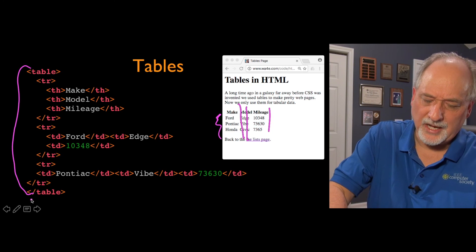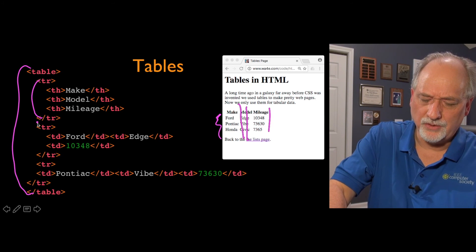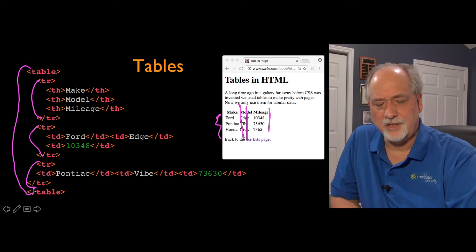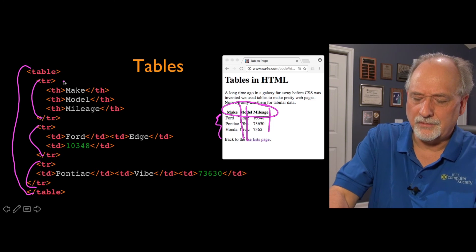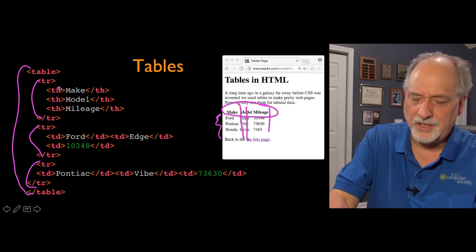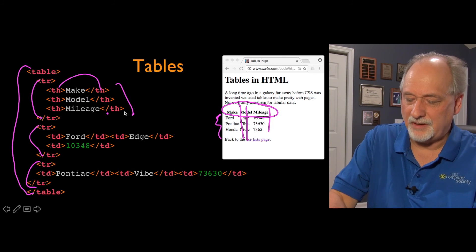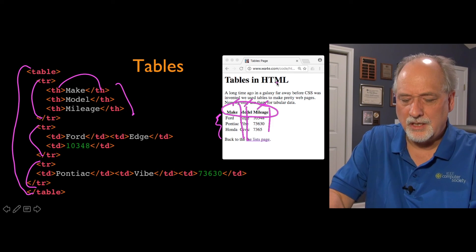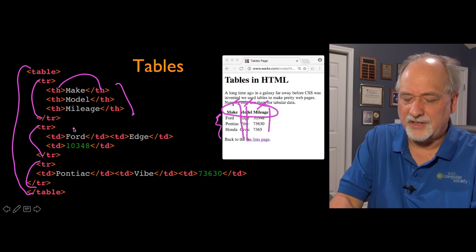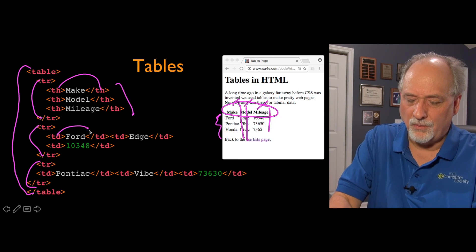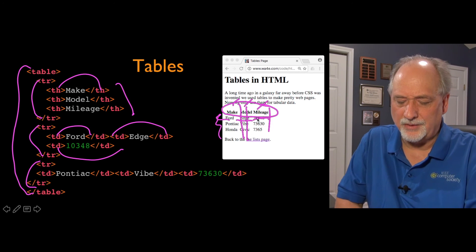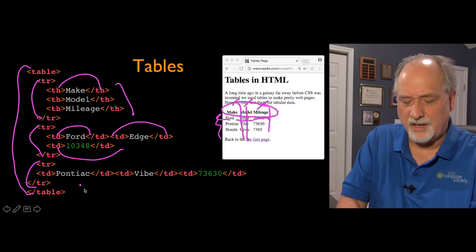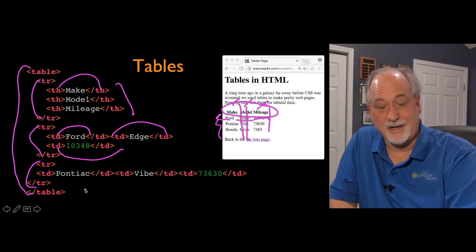The table markup is pretty straightforward. We start a table with the table tag, then we have a series of rows using the tr tag — tr to slash-tr. If there's a header line, we use th to slash-th. This basically says it's going to be a three-column table, because we have three table headers. Then we put tds for the data — td stands for data. So that's the make, model, and mileage, and on and on as we go. It's not hard to build them; you just need to keep track of how many columns you've got.